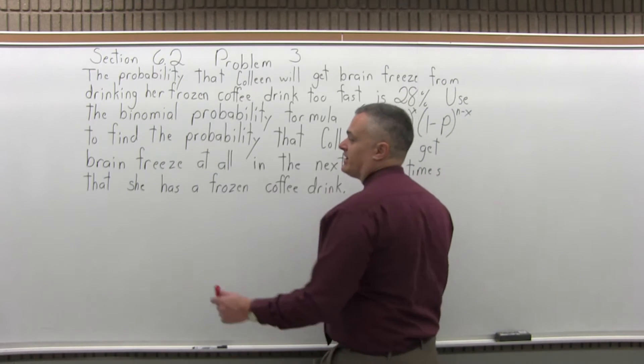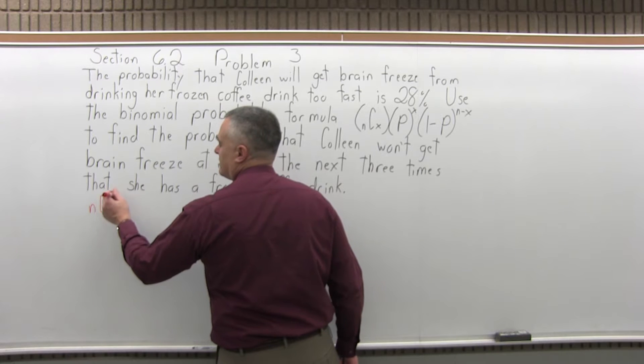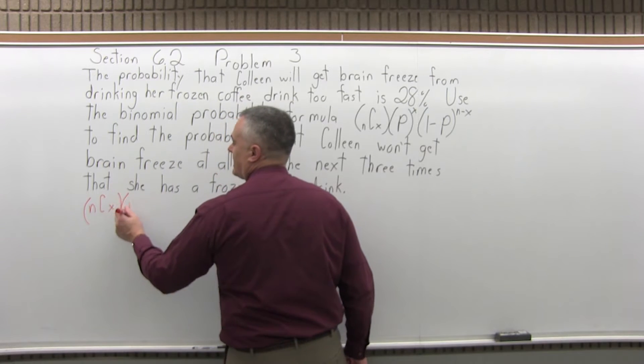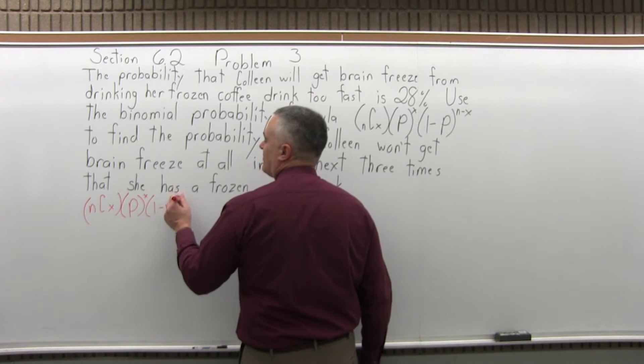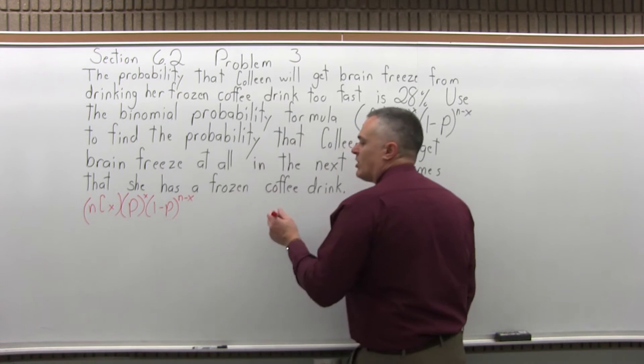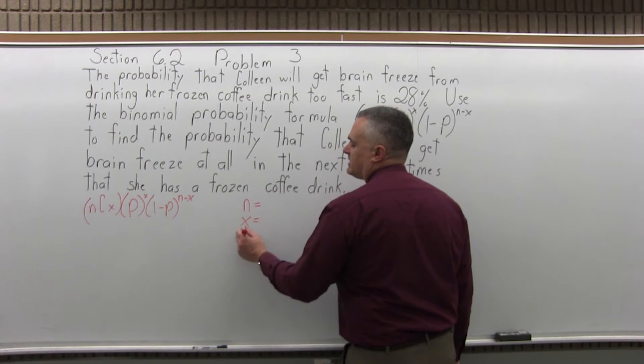When I do one of these problems, I like to start off by writing out the formula: n combination x times p to the x power times 1 minus p to the n minus x. And then off to the side, write n equals, x equals, and p equals, and then fill it in.